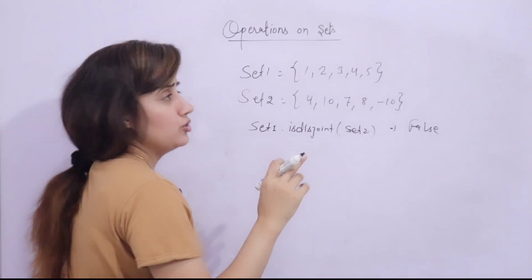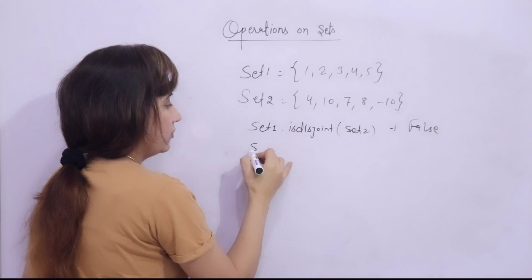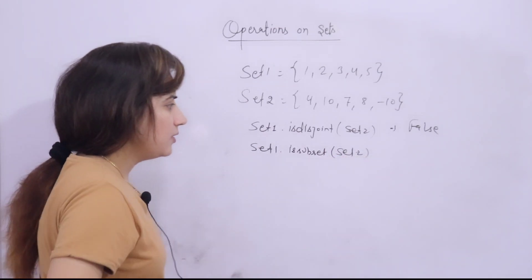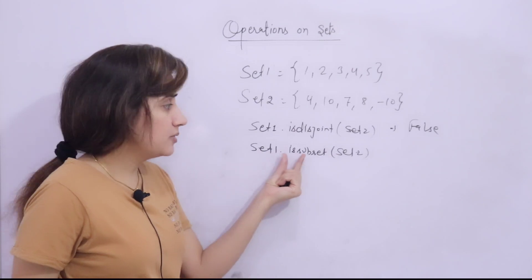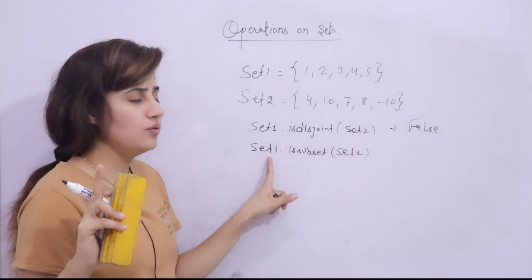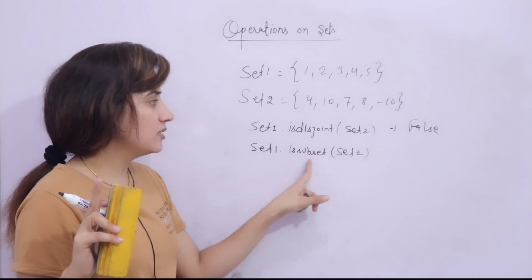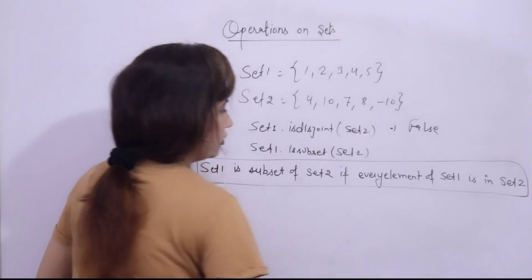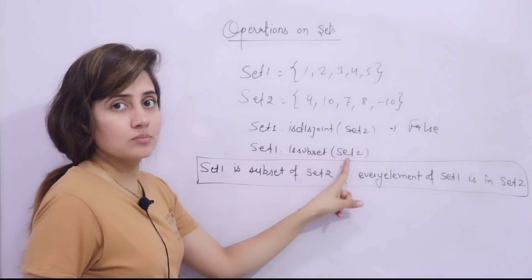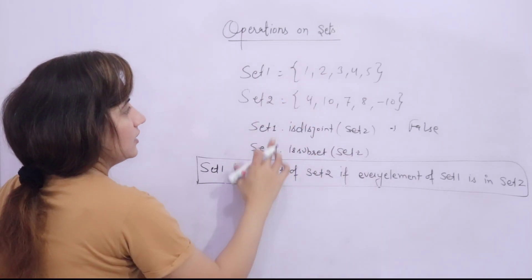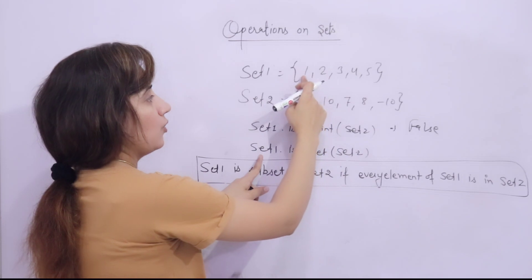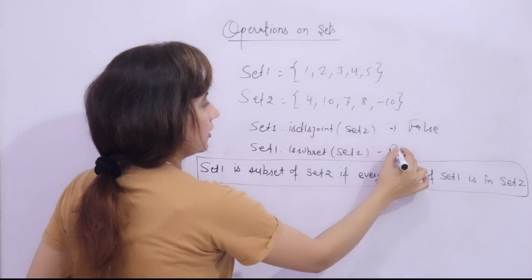Now for subset — if I want to check whether set one is a subset of set two, we have the method issubset(). Set one is a subset of set two if every element of set one is in set two, meaning set two contains every element of set one. In the current example, set one contains one, which is not in set two, so issubset() will return false.